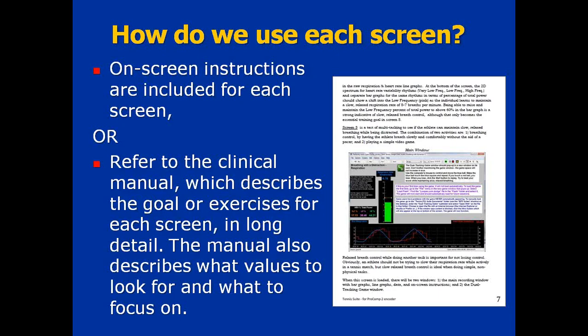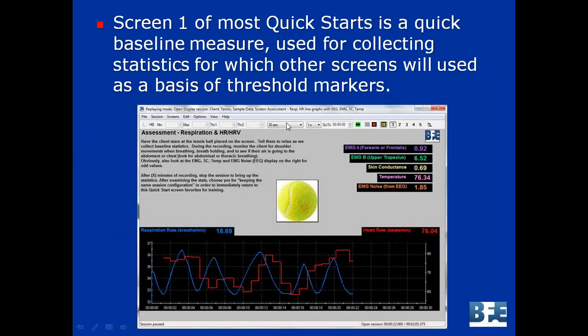Each screen contains instructions directly embedded on it, making it easier for you the clinician or trainer — it lets you know what to look at and what to tell the athlete to do. If there are not many instructions on the screen, it says to refer to the clinical manual, which gives a full description of exactly what you need to do for the goal of the exercise, how you interact with the screen, and what to set at the beginning. We even tell you in the clinical manual the exact details of what sort of numbers to look for.